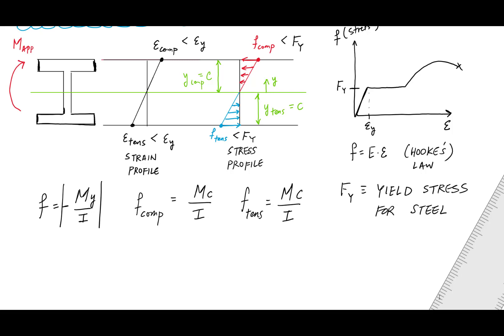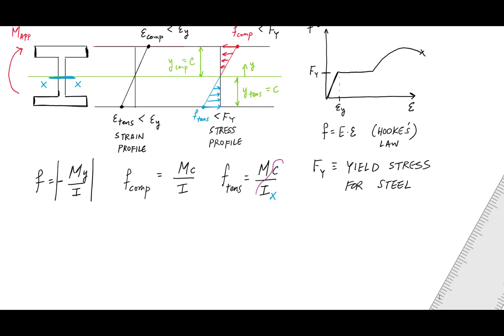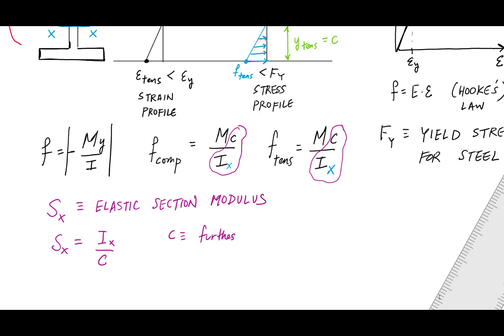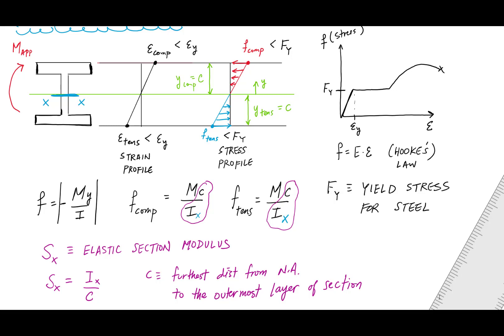As you're probably learning in steel design, we have axes associated with the cross section. If you look in Part 1 of the AISC manual, you'll see bending axes. This horizontal axis here is the X-X axis. So we call this bending about the X axis because the applied moment is about the X axis. One key property to be aware of is I over C — this is called the elastic section modulus, denoted S sub X, where C is the furthest distance from the neutral axis to the outermost edge. All behavior in the linear elastic region uses equations from mechanics of materials.